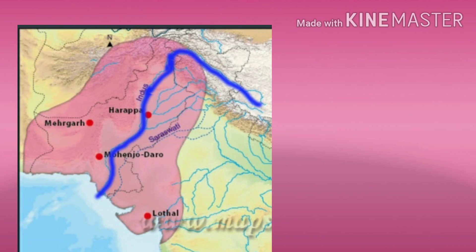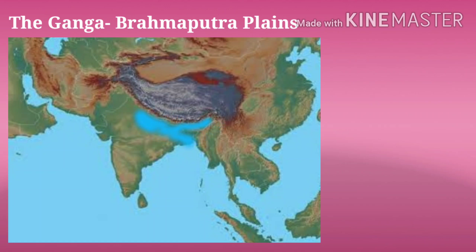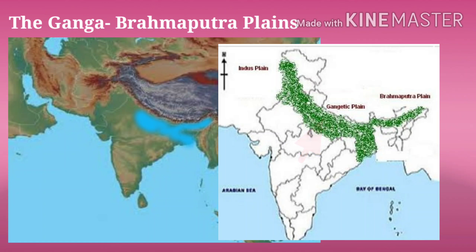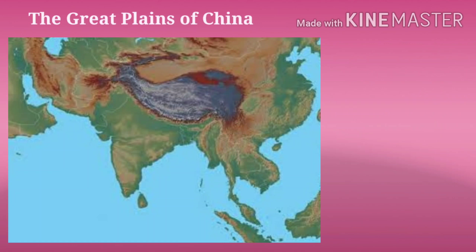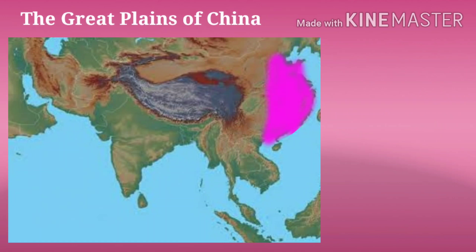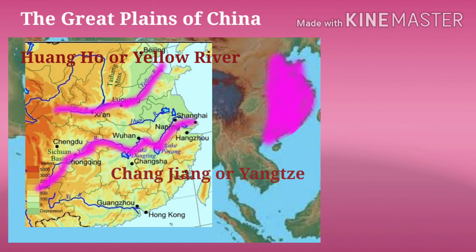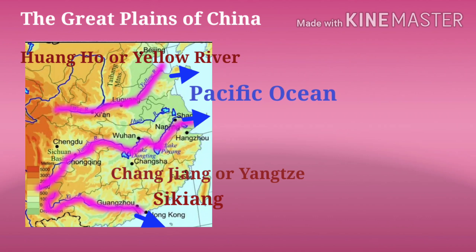The third one is the Valley of Ganga and Brahmaputra, or the Ganga-Brahmaputra Plains. These plains spread across North India and Bangladesh, and are built up by the rivers Ganga and Brahmaputra. The next one is the Great Plains of China, which are formed by three large rivers: the Huangho, the Changjiang also called Yangtze, and Sikiang. These rivers empty into the Pacific Ocean.